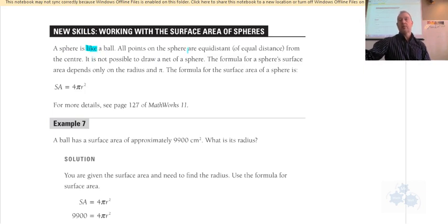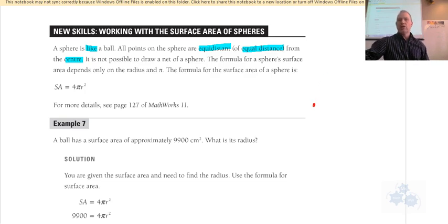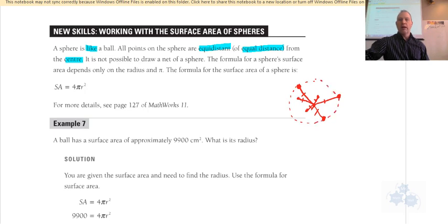All points on the sphere are equidistant — that means equal distance — from the center of the ball. If we had a point suspended in space and drew lines of the same distance in every direction, three-dimensionally, we would have a sphere. All of those points would be somewhere on the surface of the sphere.